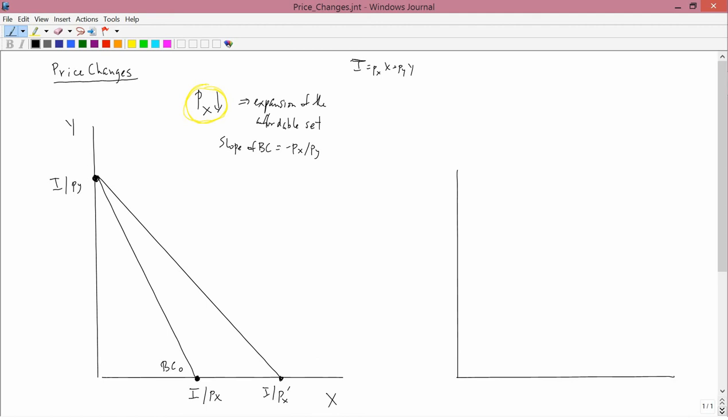We've got an expansion of the affordable set, which is what we said we wanted intuitively. The affordable set has rotated around its upper left hand corner, so it's expanded in the X direction. Now that doesn't mean we can only buy more X. There are various things that can happen, but the budget constraint has expanded in a definite kind of way, in the way I've just drawn.